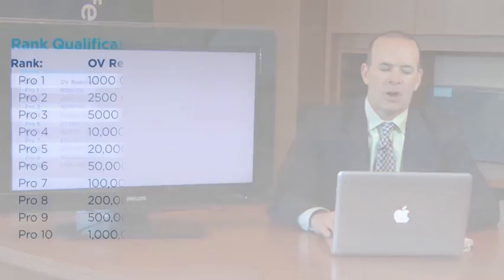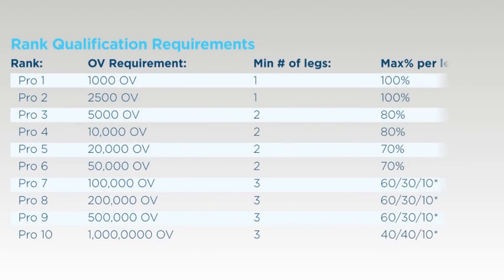This graph here shows a column on the far left, and it's ranks. We have 10 ranks within LifeVantage. We have Pro 1 through 3, then we have our Premier ranks, 4 through 6. We have our Elite ranks, which are Pro 7 through 9, and then we have our Master Pro 10. Each rank is qualified to earn on an additional level deep.